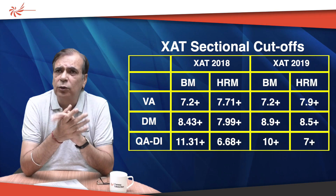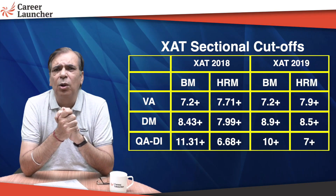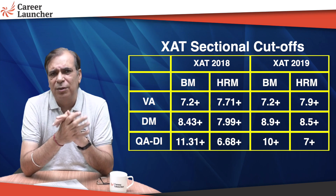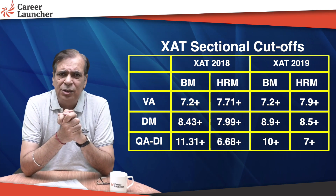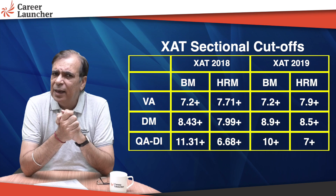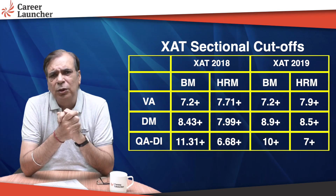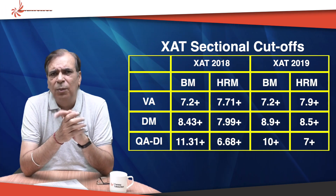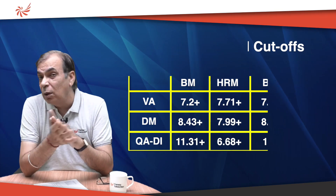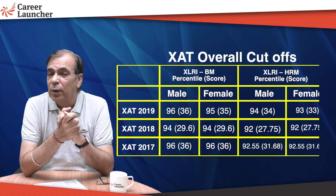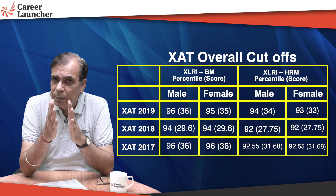In terms of cut-offs, the interesting thing about XAT is that if you get a double-digit score in all three sections you are safe. A score of about 10 in English, 10 in decision-making, and about 10 in maths will typically mean you have cleared the sectional cut-offs. An overall score of about 35 would be required to get an interview call for the XLRI BM program.